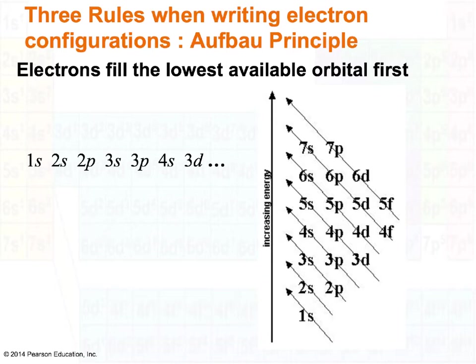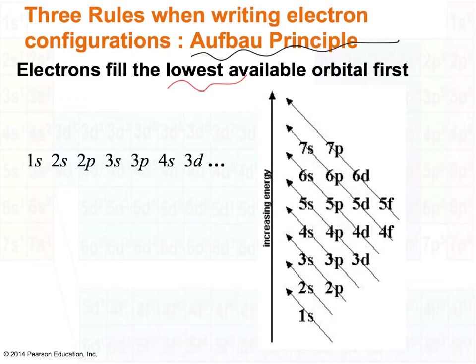Before we start writing electron configurations, there are three rules you must be aware of. The first is called the Aufbau Principle. It simply says an electron will go into the lowest energy orbital first. There is a very strict ordering of orbitals from lowest energy to highest energy, and this must be memorized.